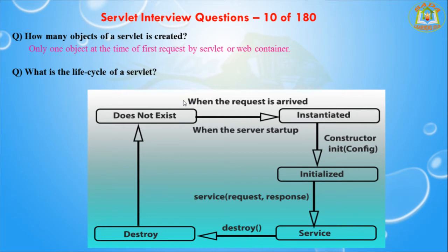Only one object is created at a time, on the first request, by the web container. Only one object is created by the servlet container. The next question is: what is the lifecycle of a servlet?